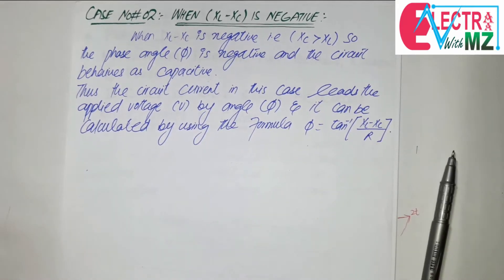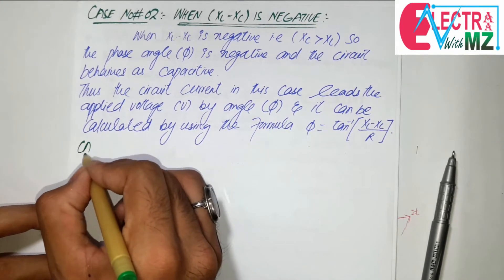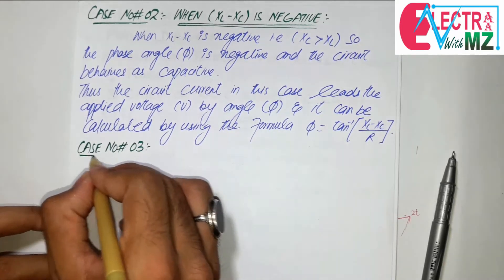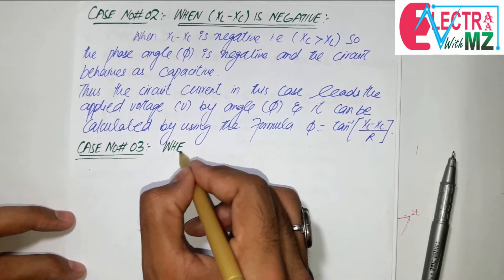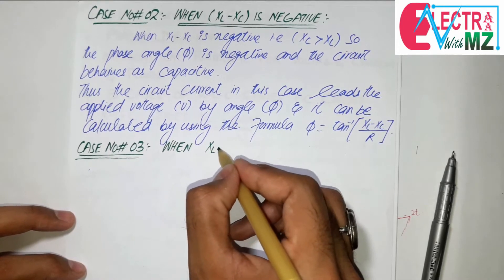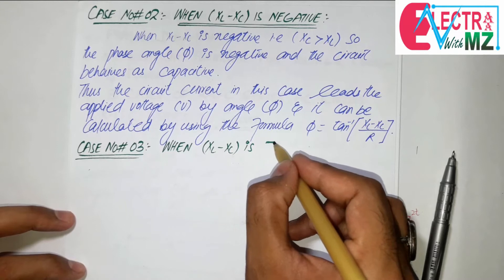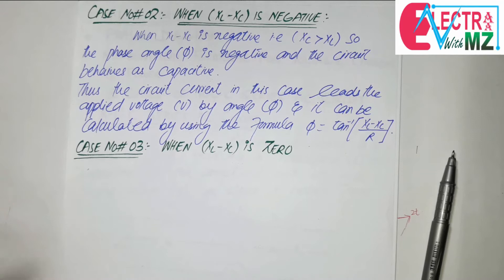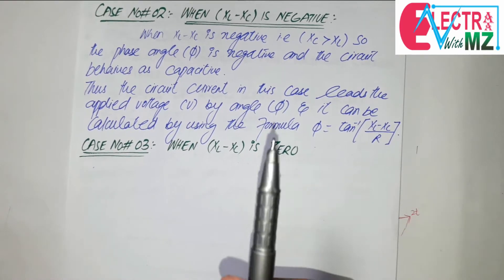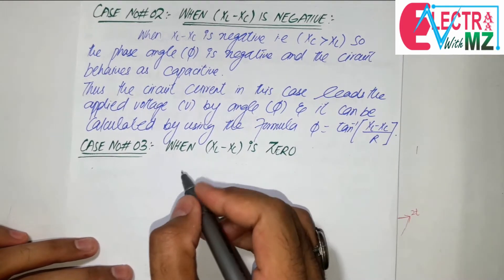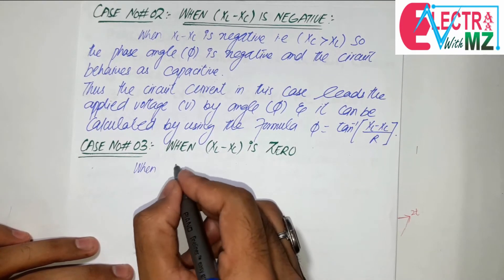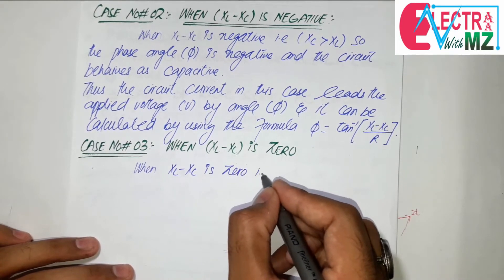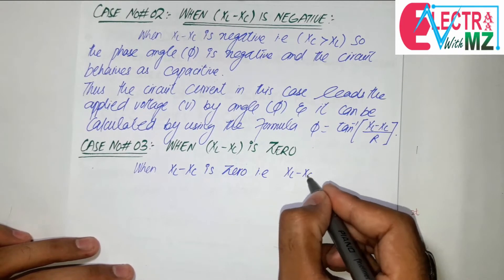Now in the third case, case number 3: when XL minus XC is 0. What does it mean? It means that XL is equal to XC, which means it is a purely resistive behavior. So when XL minus XC is 0, it means XL is equal to XC.